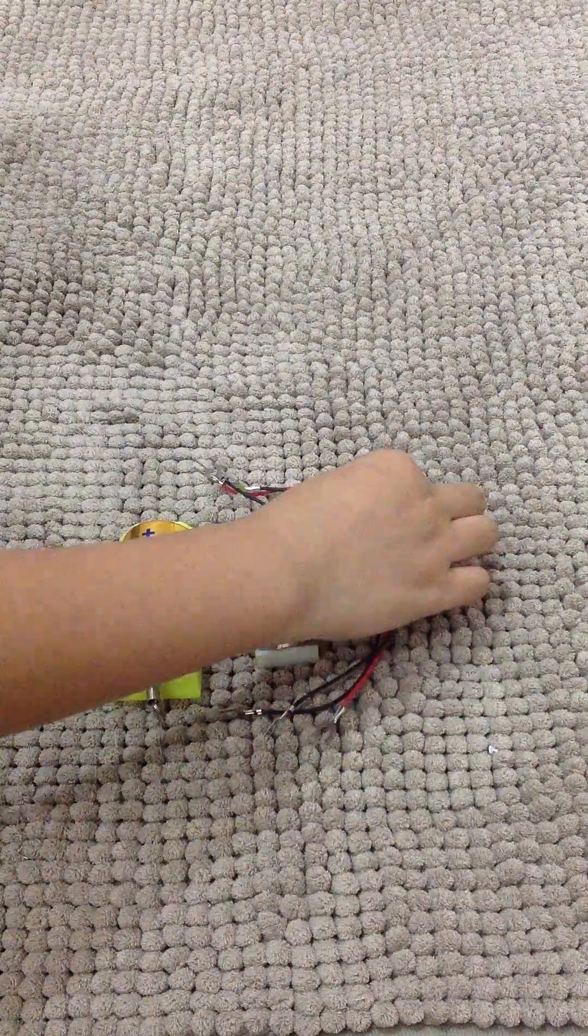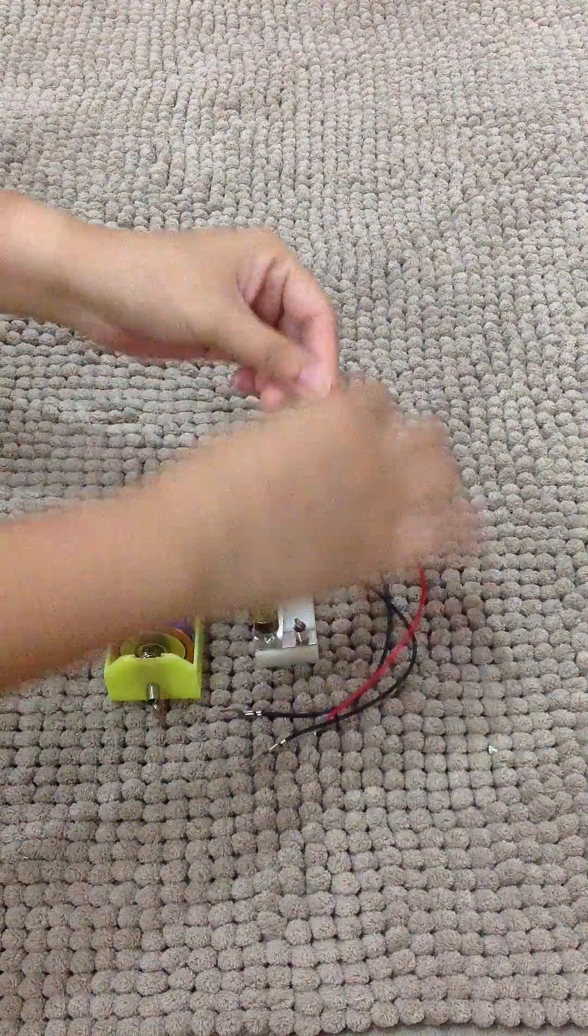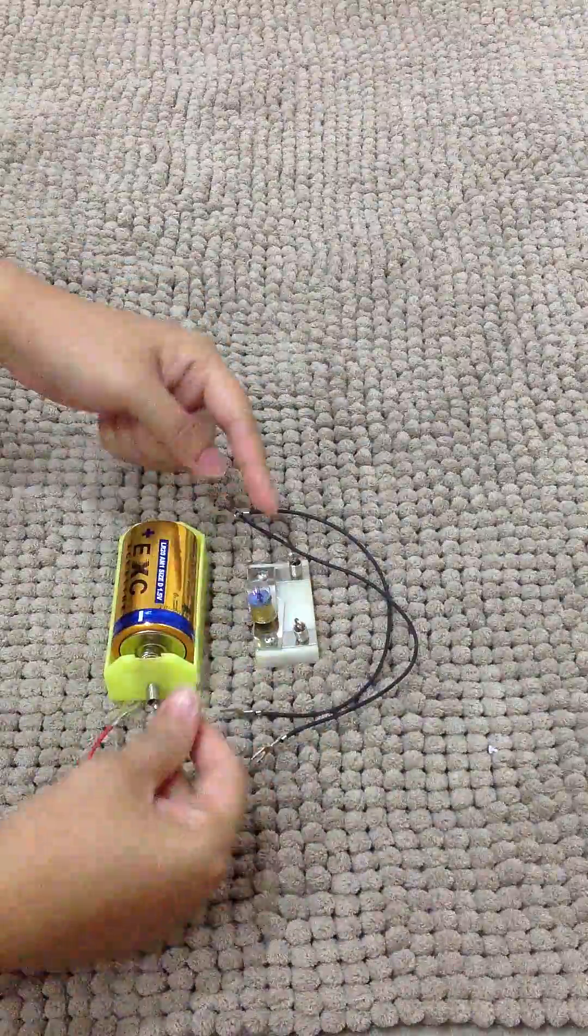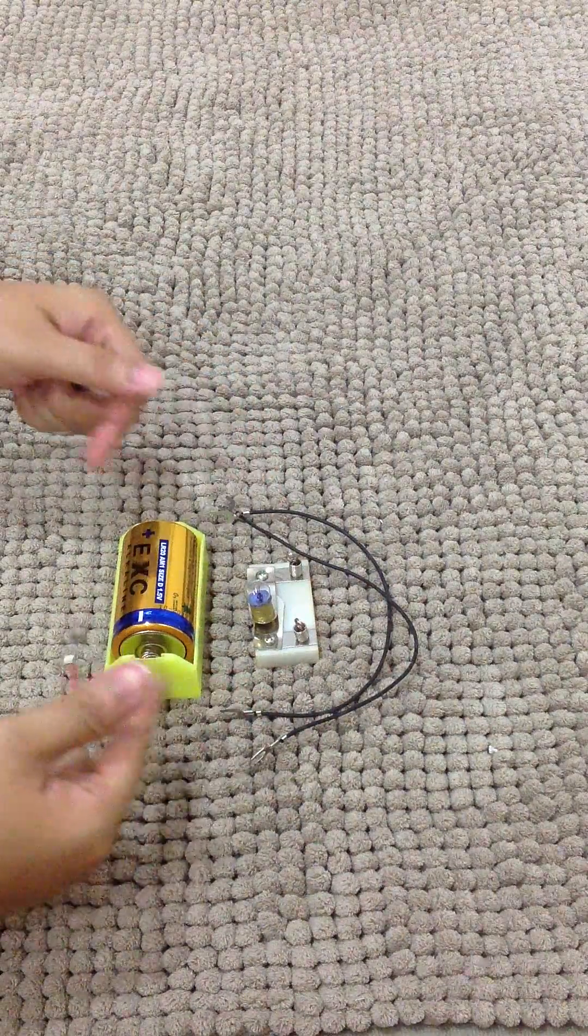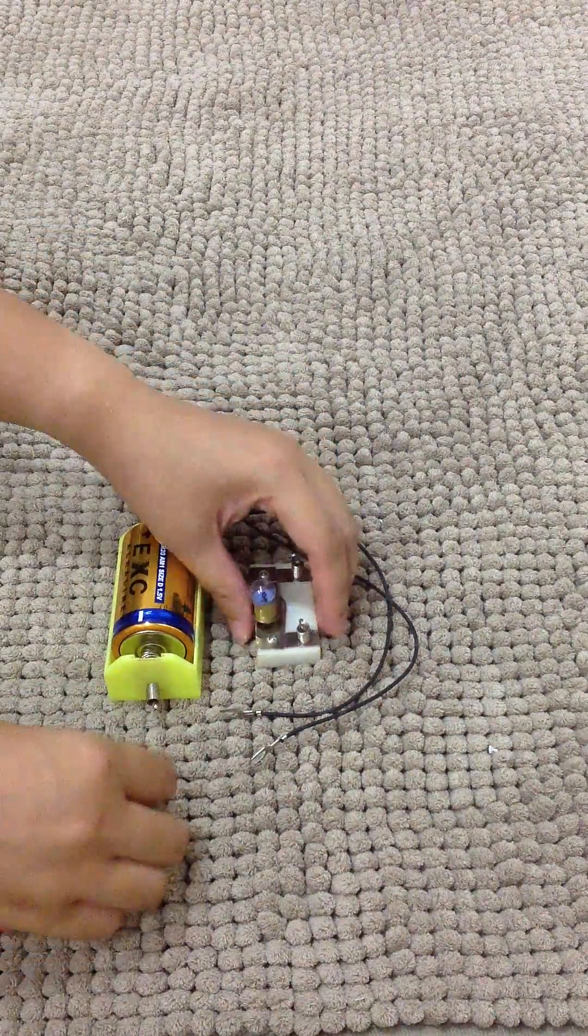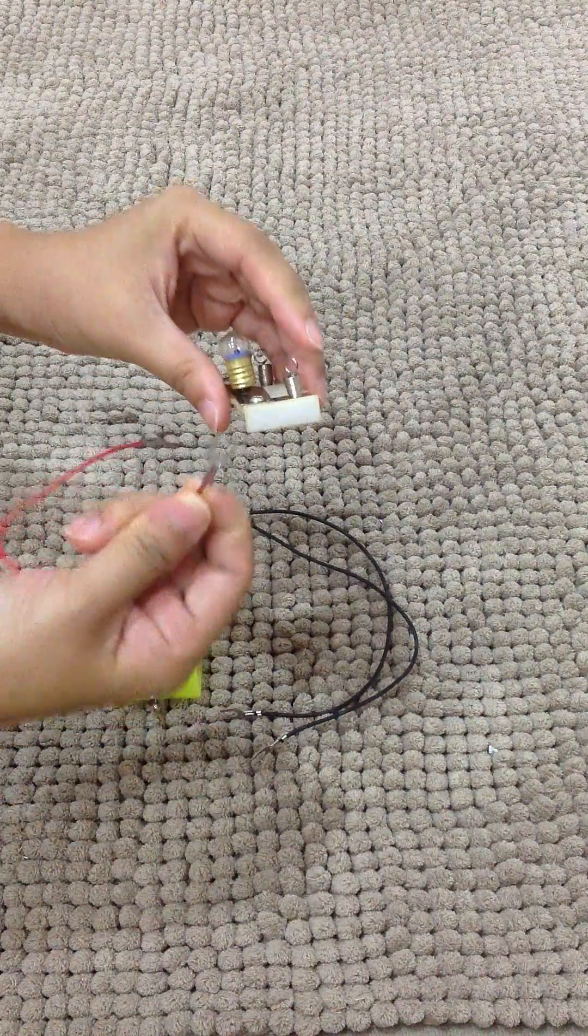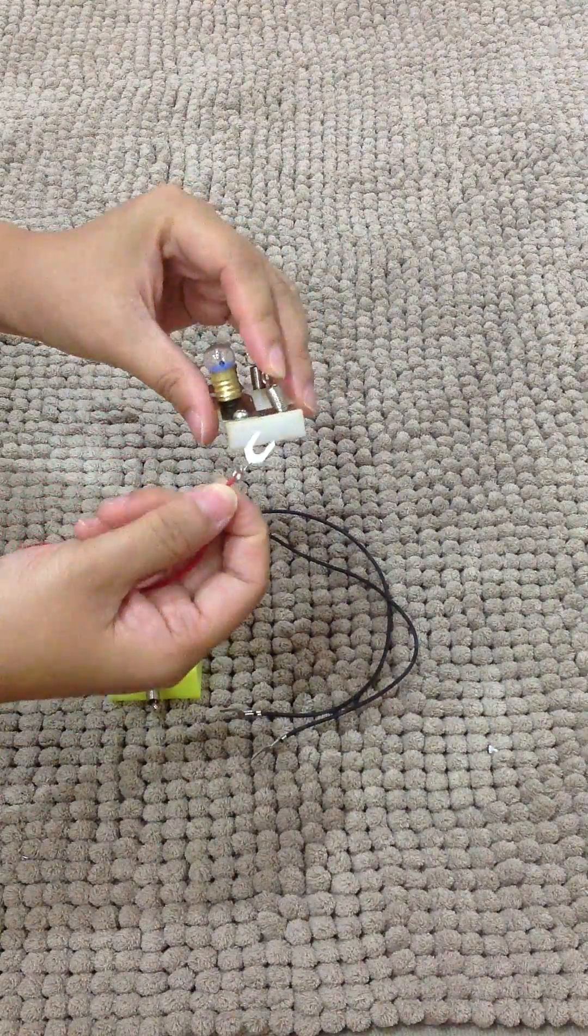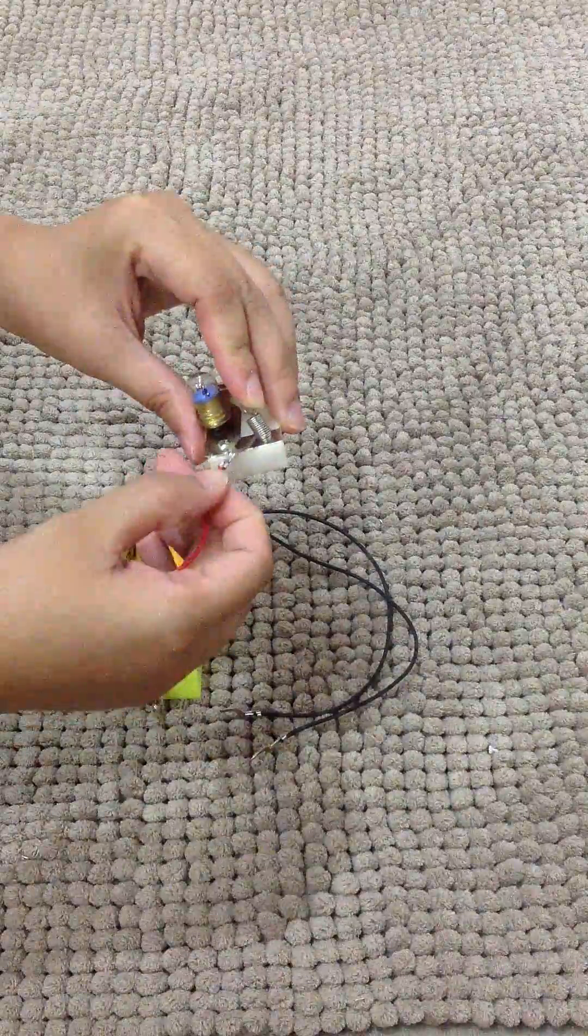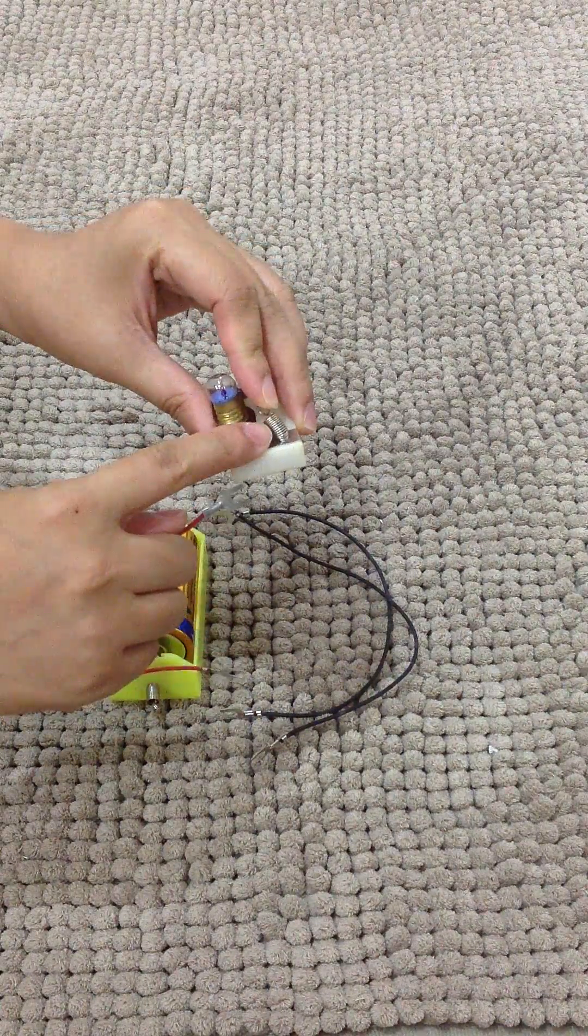Next, when you are connecting the wire to the other components of the circuit, make sure that the metal tip is in direct contact with the spring.